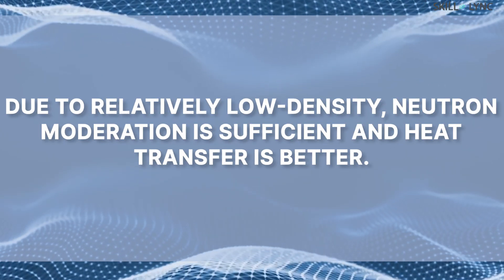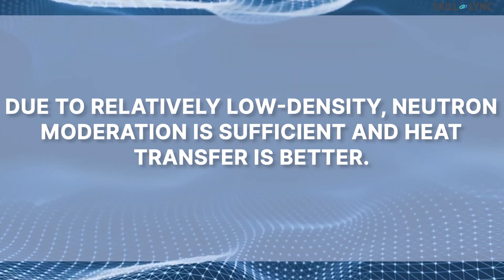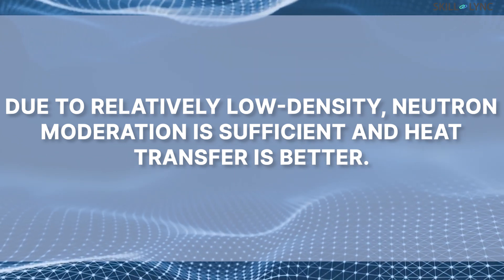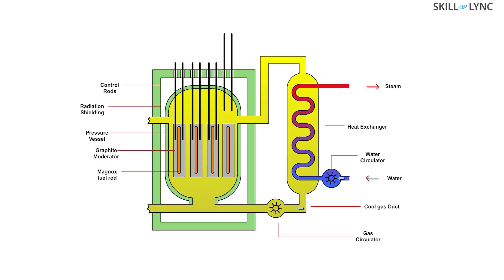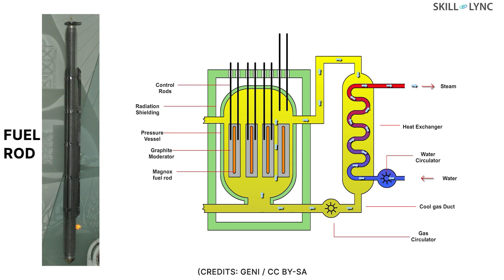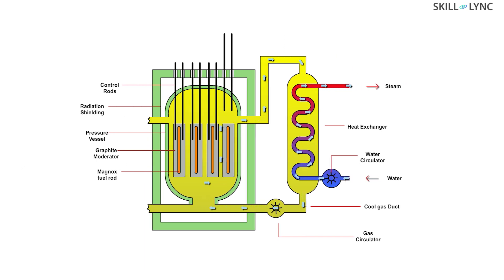Since the density of gases is relatively lower than liquids, sufficient neutron moderation is possible along with better heat transfer. The fuel used in gas cooled reactors is also different. Natural uranium is used as fuel and cladding is provided to the fuel with a magnesium alloy called magnox, which acts as a non-oxidizing agent and reduces reactivity with metals in the core.